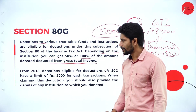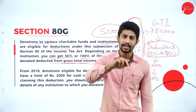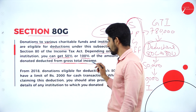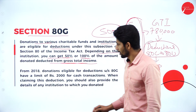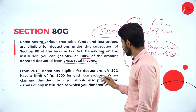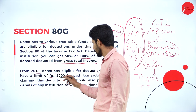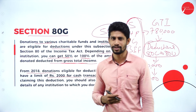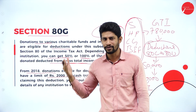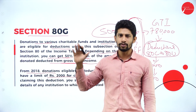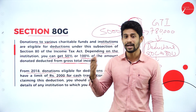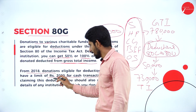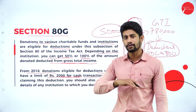Continuing with Section 80G: based on which institution or charitable trust you are giving the donation, you will get either 50% or 100% deduction from your gross total income. From 2018, donations eligible for deduction under Section 80G have a cash transaction limit of 2,000 rupees. If you are giving in cash, you can take the exemption up to rupees 2,000 only.